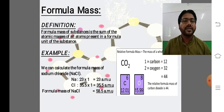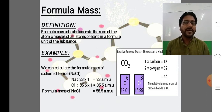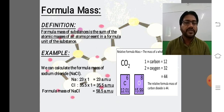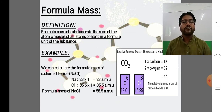Ab aate hain formula mass ki taraf. Formula mass of a substance is the sum of the atomic masses of all the atoms present in a formula unit of a substance. Yeh molecular formula mass se kuch zyada different nahi hota. Example mein NaCl — sodium chloride, common table salt — mein Na aur Cl dono ke atoms ki tadaad 1 hai. Sodium ka atomic weight 23 hai, to 23×1 = 23. Chlorine ka atomic weight 35.5 hai, to 35.5×1 = 35.5. Inko plus karein to 58.5 atomic mass units aata hai.